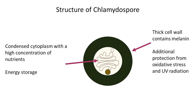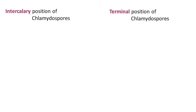When environmental conditions become favorable, the fungus can utilize this nutrient-packed chlamydospore to support its growth and development. Chlamydospores, as specialized structures of fungi, exhibit a versatile distribution within the hyphae. They can be located in two primary positions: intercalary or terminal.